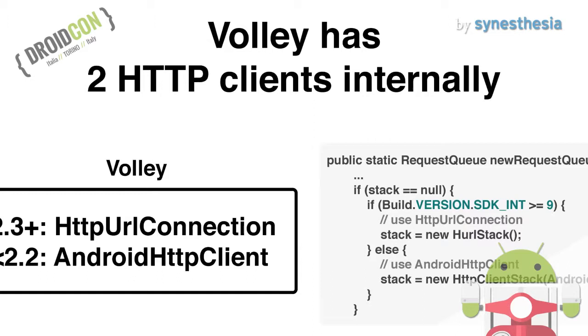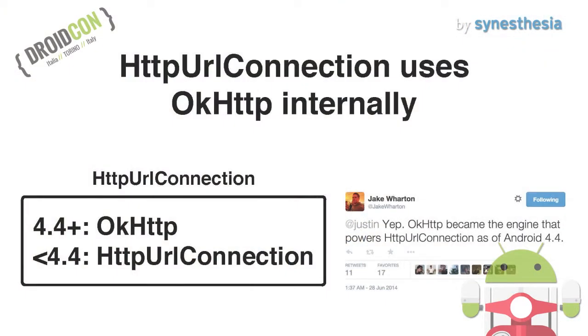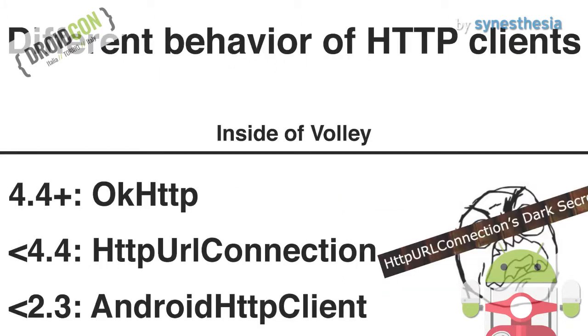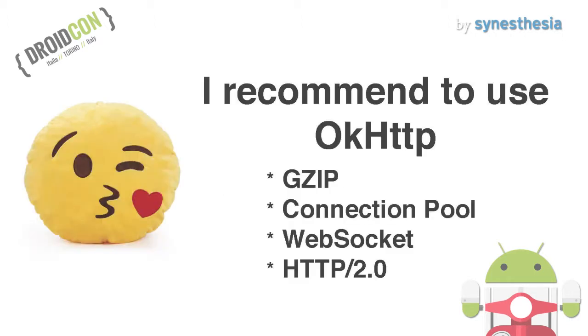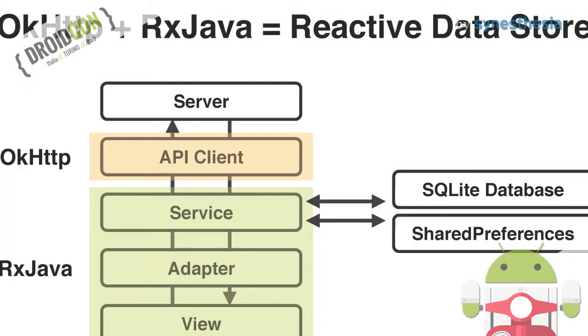We had used Volley as an API client before. Volley has two HTTP clients internally: if the OS version is Gingerbread or later, Volley uses HttpURLConnection; otherwise, it uses Android HTTP client. In addition, HttpURLConnection uses OkHttp internally. So it means I was using three HTTP clients unintentionally, and their behavior is sometimes different. Simple is better, right? I recommend using OkHttp. OkHttp supports GZIP by default and also supports connection pooling, WebSocket, and HTTP/2. I said goodbye to Volley — now we are using OkHttp and RxJava. We don't like callbacks, so we decided not to use AsyncTask and AsyncTaskLoader anymore.